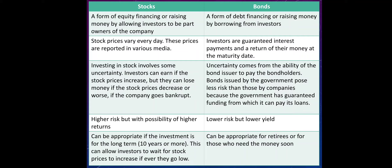For bonds, investors are only guaranteed interest payments and a return of their money at the maturity date. The value is already fixed — there is a fixed interest rate and a fixed amount of money to be paid, so the prices do not increase nor decrease. For stocks, investing in them will involve some uncertainty because stock prices vary every day. If the stock prices increase, investors will earn money, but they will also lose money if stock prices decrease. Worst case scenario, if the company goes bankrupt, their shares of stocks will have no value at all.